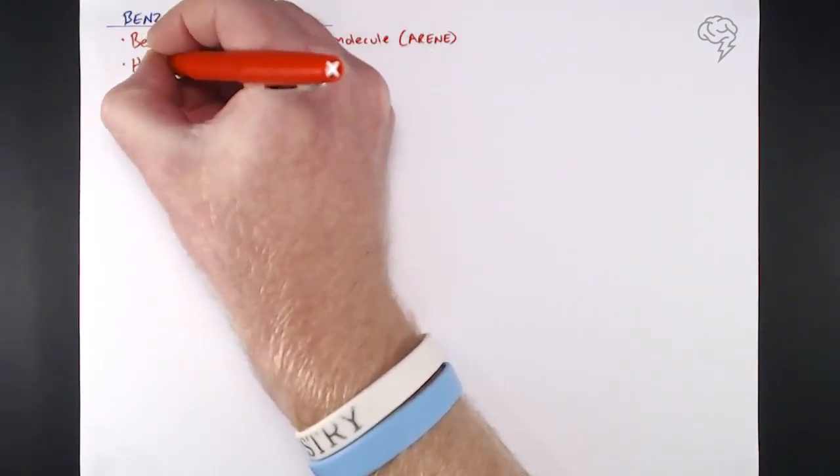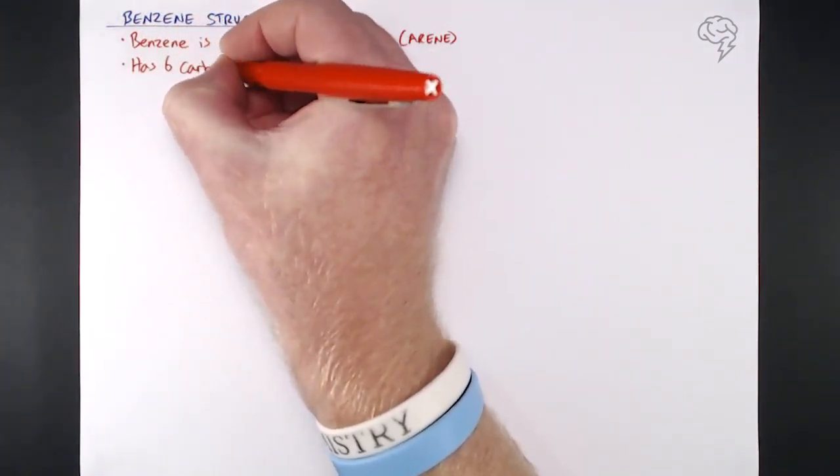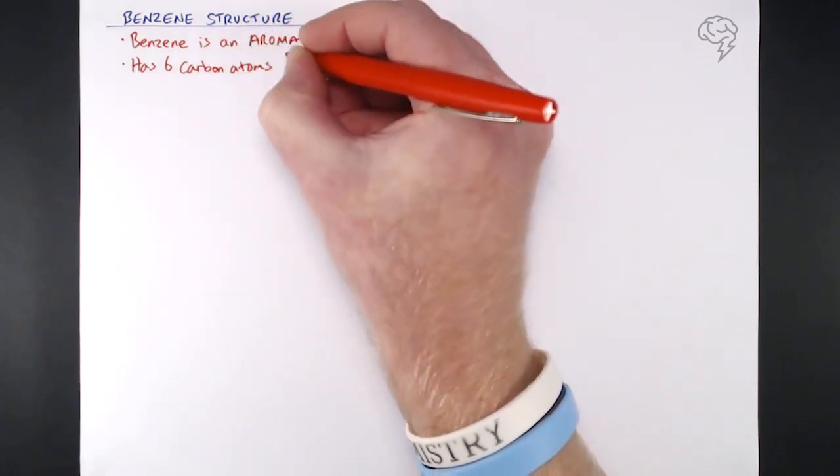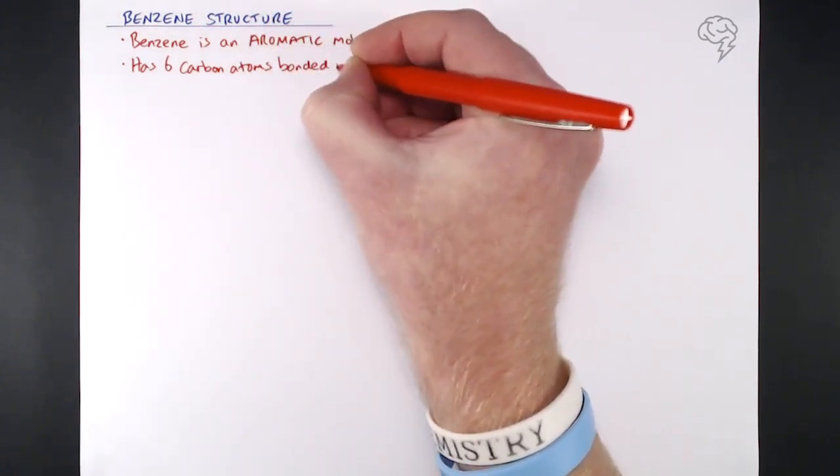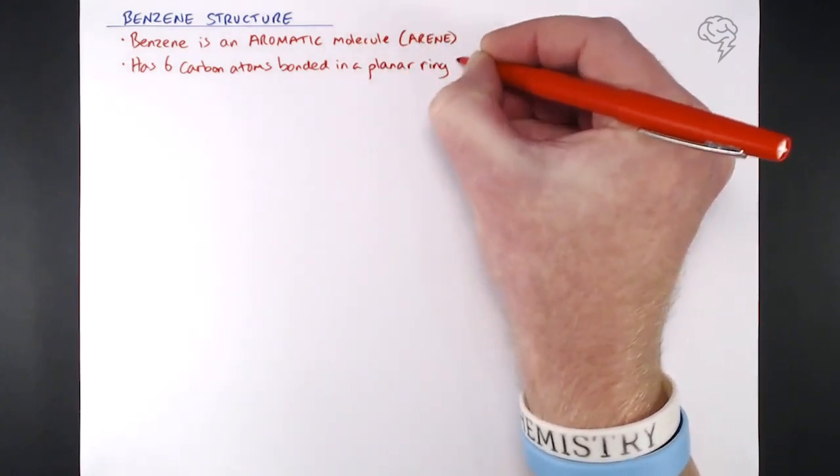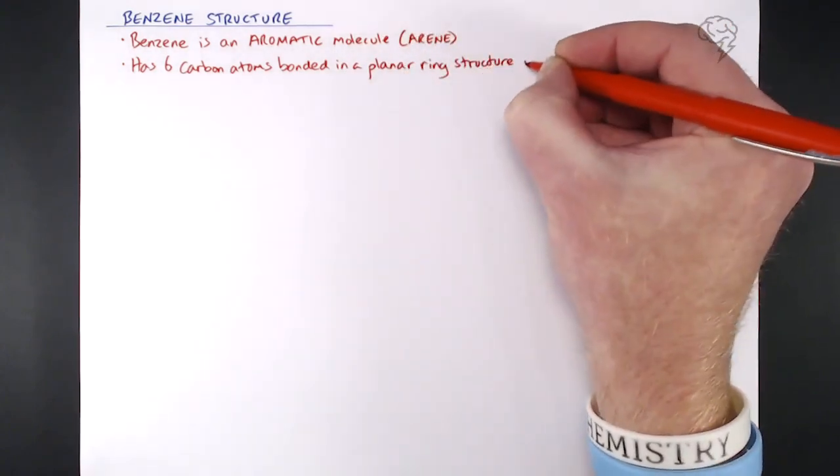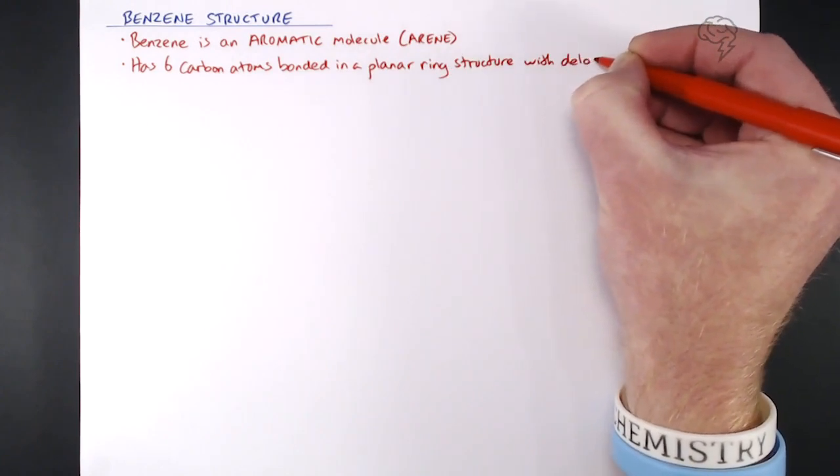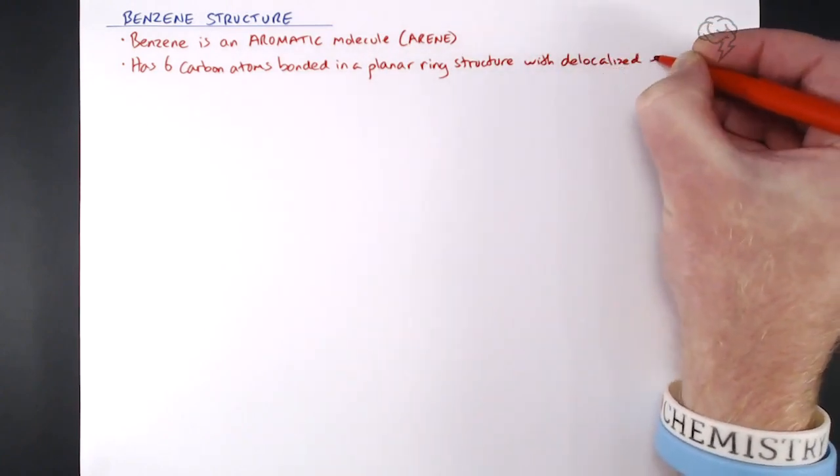Now if somebody asked me to write down in a sentence what the structure of benzene is, it would be this. It's got six carbon atoms bonded in a planar ring, so they're all on one plane. So it's got this planar ring structure with delocalized electrons within that ring structure.